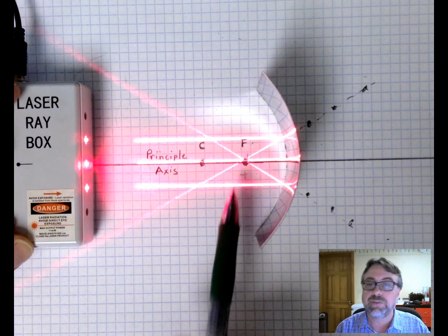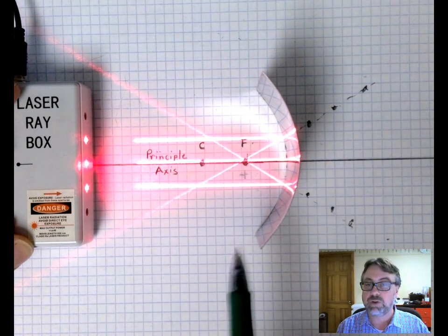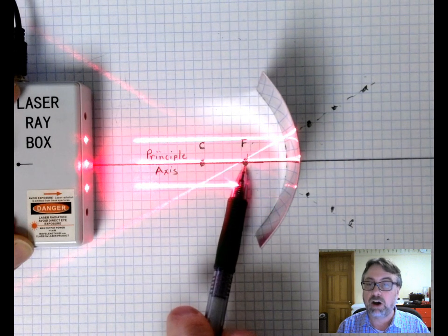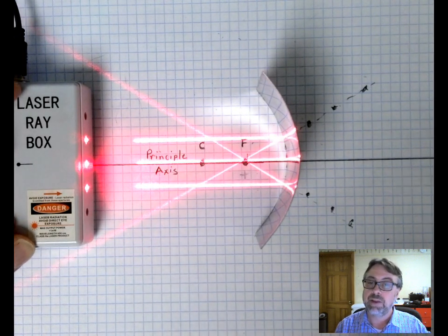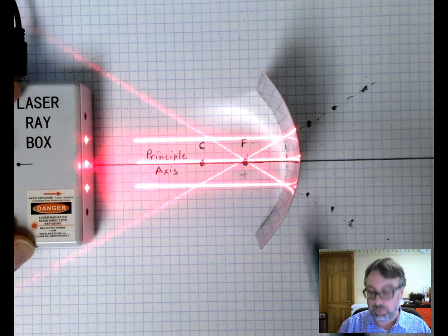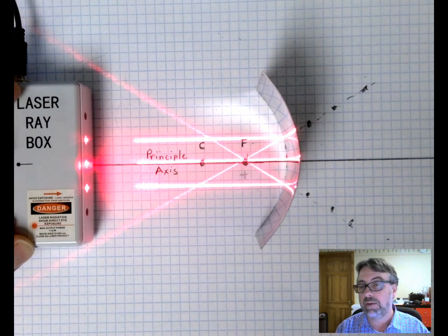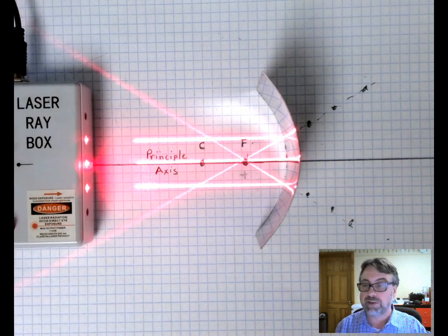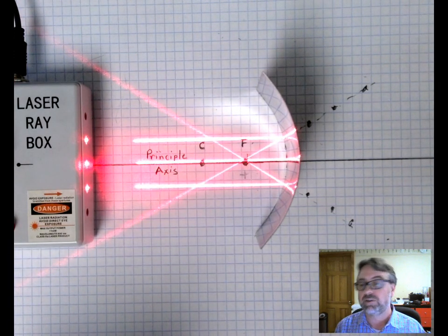And again that is why this is referred to as the focal point. As light comes in straight to this curved mirror these rays all get reflected through that focal point. The reflections are basically bending inwards from the mirror. Now when the light rays are reflecting inwards we call that converging.